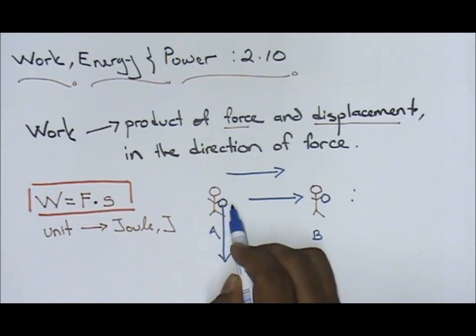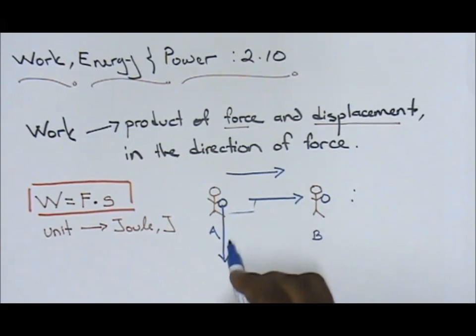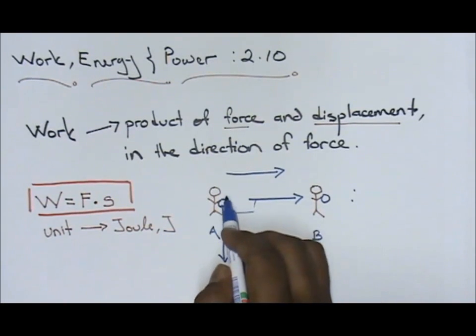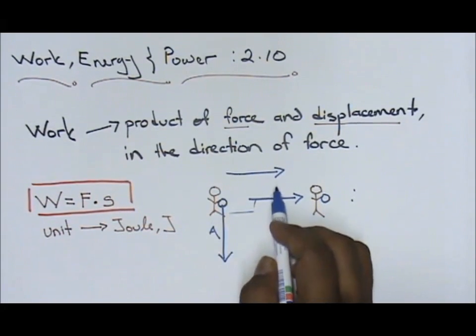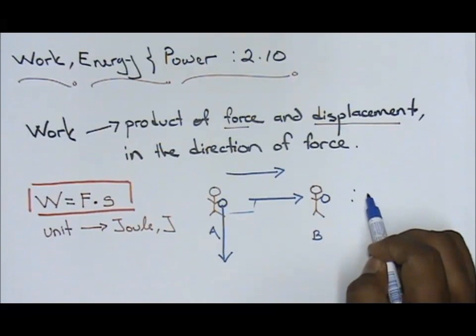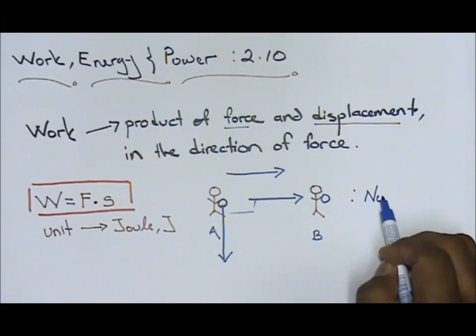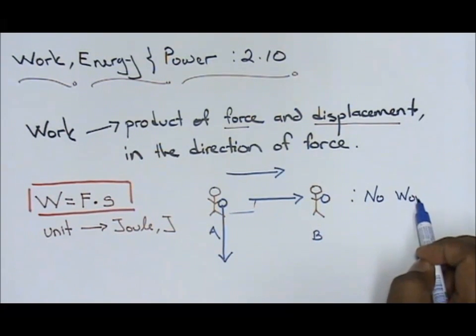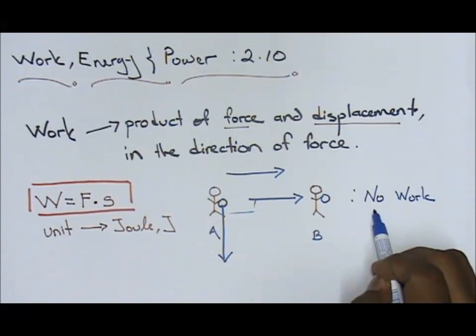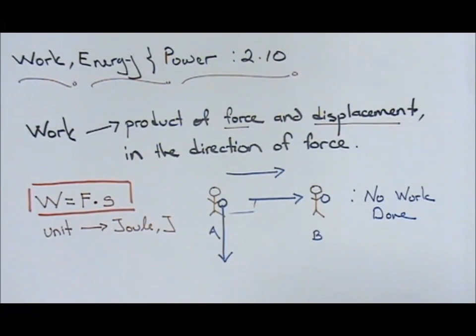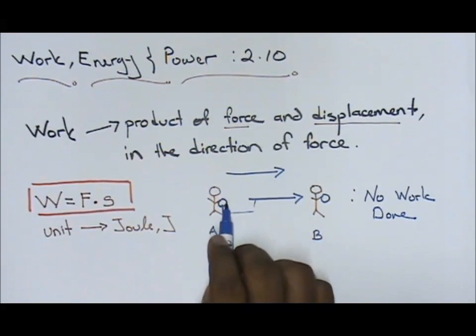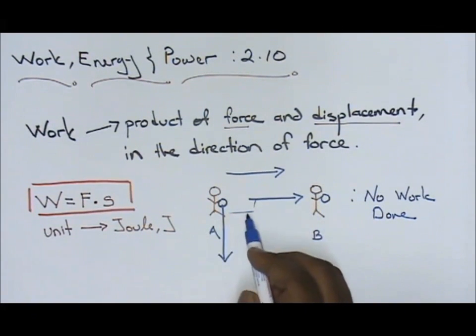If your motion in front and your weight going down, if it's perpendicular to each other, we say no work done. The reason why there's no work done is because your weight and your motion are perpendicular.